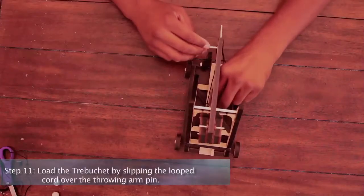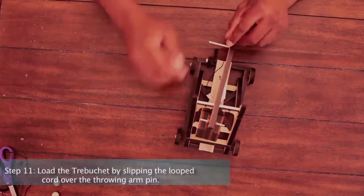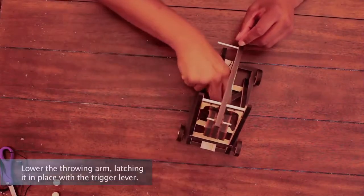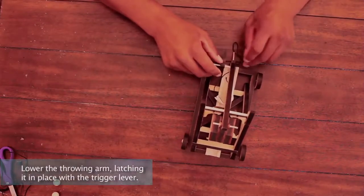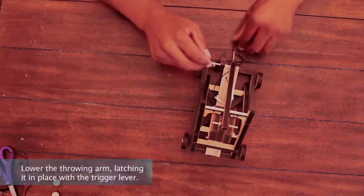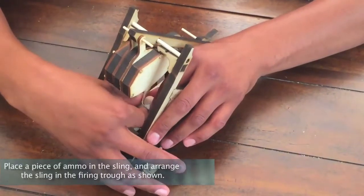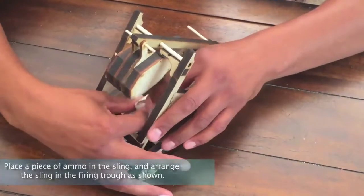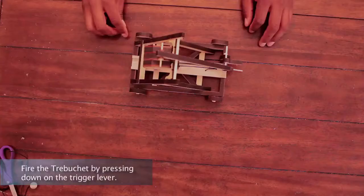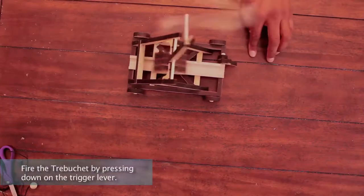Step 11: Load the trebuchet by slipping the looped cord over the throwing arm pin. Lower the throwing arm, latching it in place with the trigger lever. Place a piece of ammo in the sling and arrange the sling in the firing trough as shown. Fire the trebuchet by pressing down on the trigger lever.